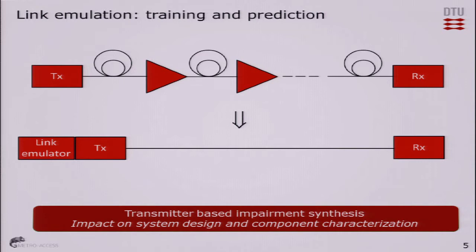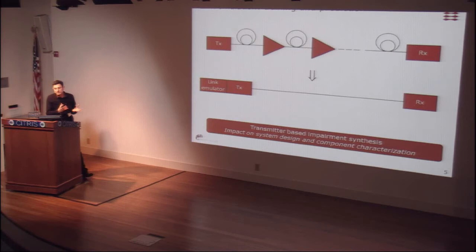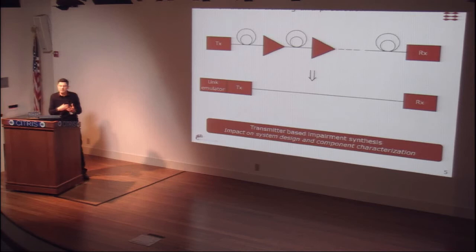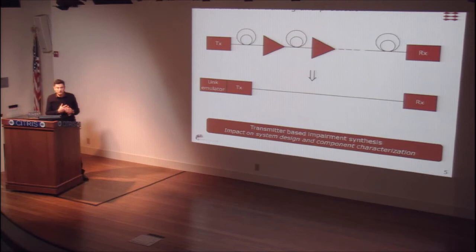In order to do that, we would like to emulate our link. For example, we have a transmitter, transmit through fibers, amplify, and so on. At the receiver, we want to learn from the observed data about the system. Once we have learned from observed data, we want to emulate this — building a probabilistic model of the entire link to simulate it at the transmitter, particularly when the system is dominated by signal non-linearities.